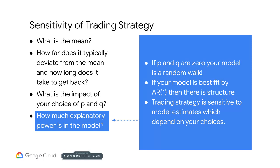We now see why trading is sensitive to model estimates. You make modeling choices throughout the process, and these decisions affect parameter values. Parameter values describe the ebb and flow of the series — where it is expected to be, how far it deviates, and how long it takes to return. These averages, volatilities, and expected reversion time affect your trading. Different decisions create different perspectives about how you should trade. Therein lies the sensitivity.